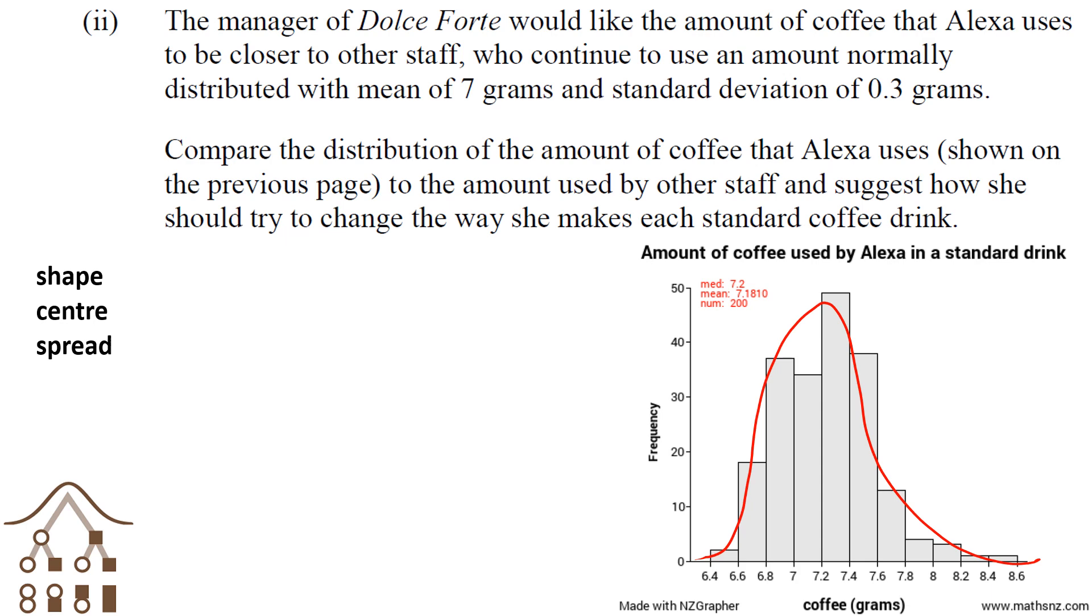Next we should talk about the centre. Best to use the mean since that's what we know about the other staff. Their mean is 7 and this mean is 7.18. So Alexa is also using a little bit more coffee than everybody else. Each of these statements needs to be a comparative statement, so that one is more than the other.